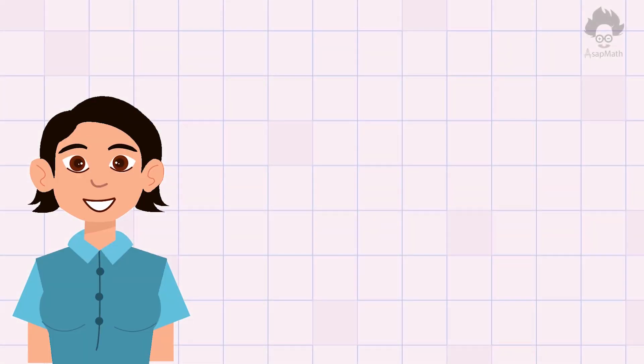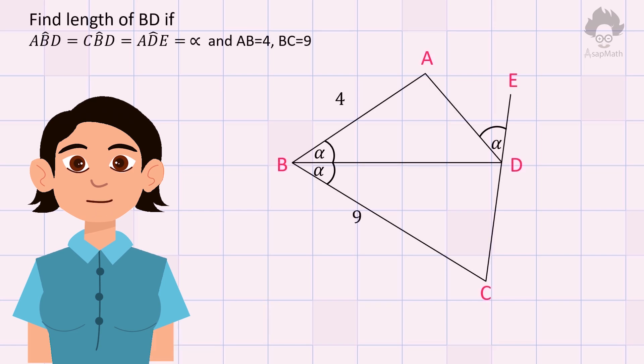Hello everyone, we are back again with another tricky geometry problem. Can you find the length of the line BD? In the shown figure, we have provided with details: AB equals 4, BC equals 9, and angles ABD, CBD, and ADE all are equal to alpha.